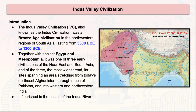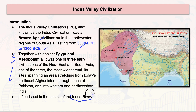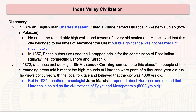Some basic information about the Indus Valley Civilization: you should know the timeline and remember it well. It was a Bronze Age civilization where bronze usage began. It is considered one of the earliest civilizations of its time, comparable to Egypt and Mesopotamia, and it flourished in the Indus river basin.